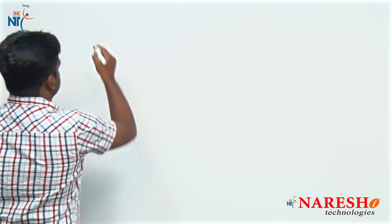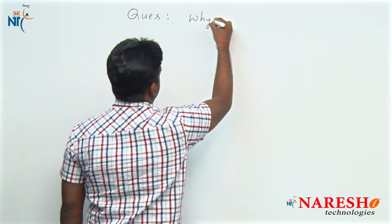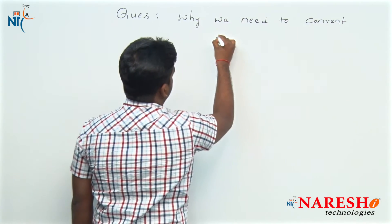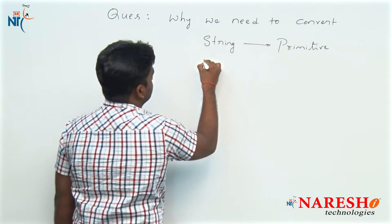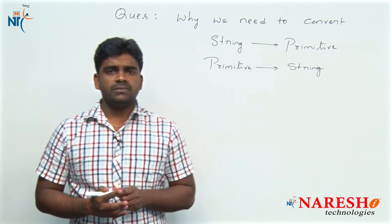But here is a doubt everyone has. Why are string to primitive conversions and primitive to string conversions important? What is the reason? Why do we need to convert string to primitive and primitive to string?